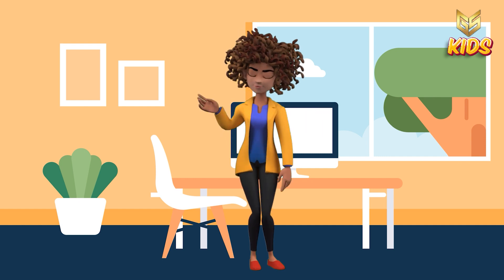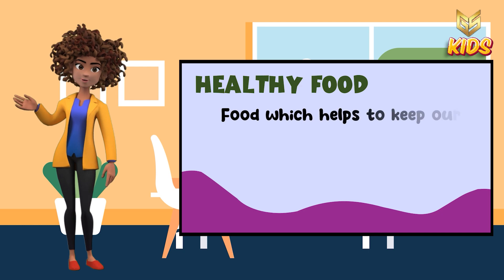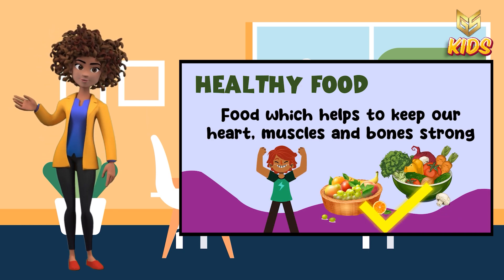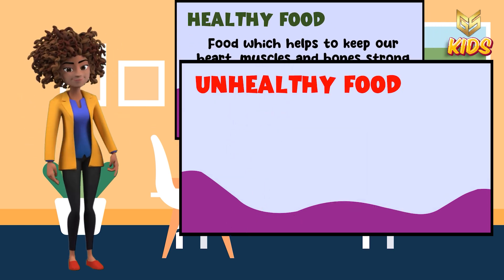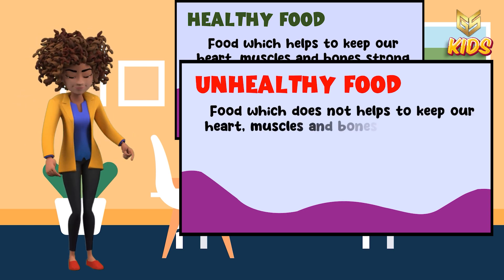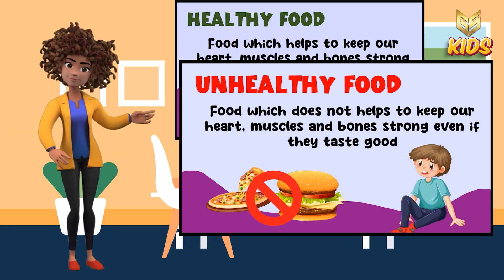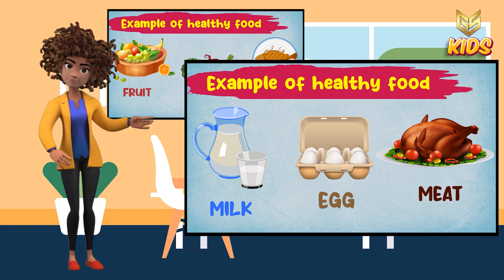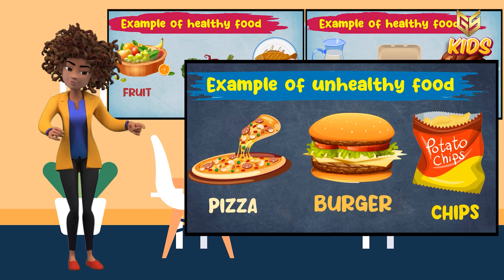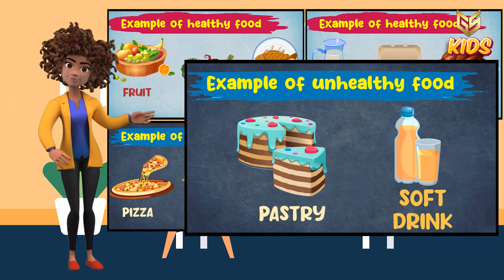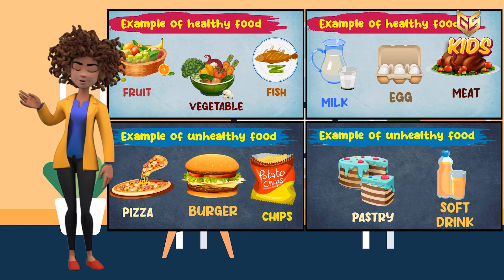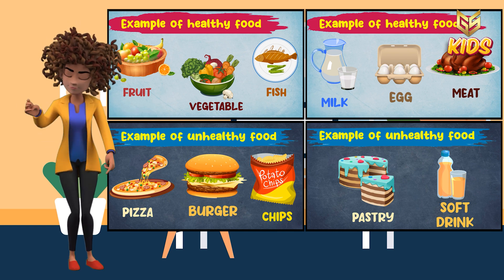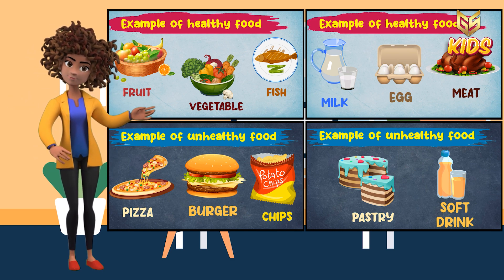Now kids, let us repeat from the beginning. Healthy food: food which helps to keep our heart, muscles and bones strong are known as healthy food. And unhealthy food: food which does not help to keep our heart, muscles and bones strong, even if they taste good, are known as unhealthy food. Examples of healthy food: fruit, vegetable, fish, milk, egg, and chicken — that is meat. Examples of unhealthy food: pizza, burger, chips, pastry, and soft drink. These are known as healthy and unhealthy food with some examples. Try to learn and practice this at home, eat healthy food, and avoid unhealthy food.